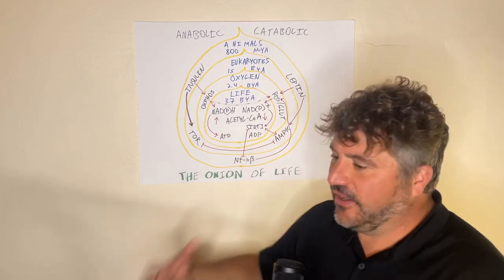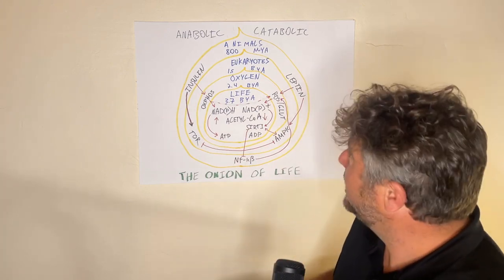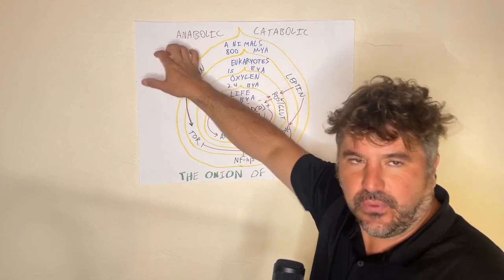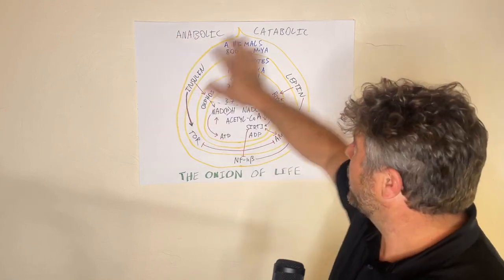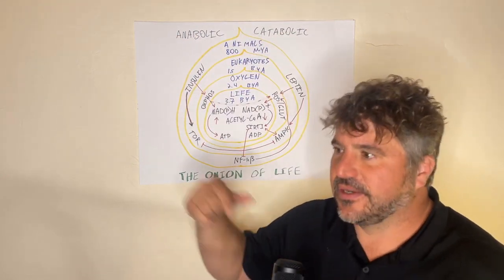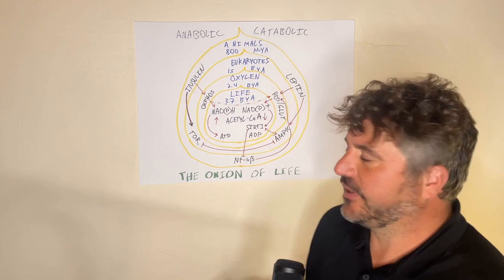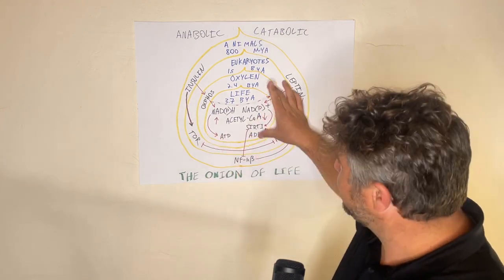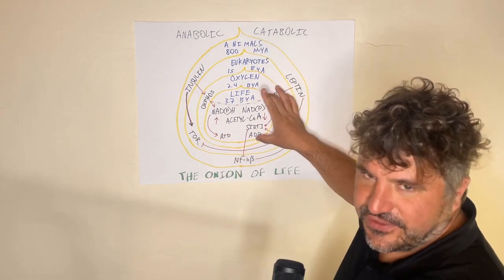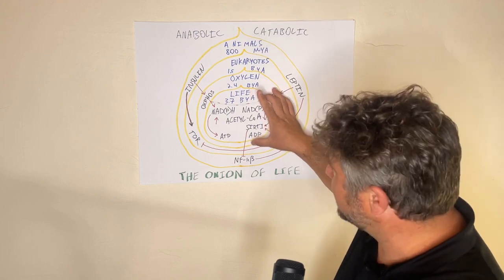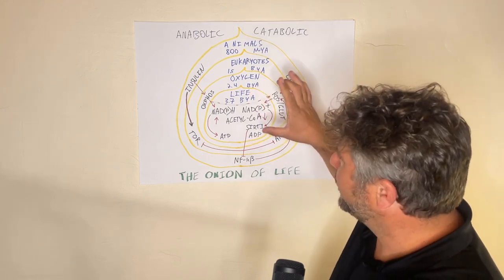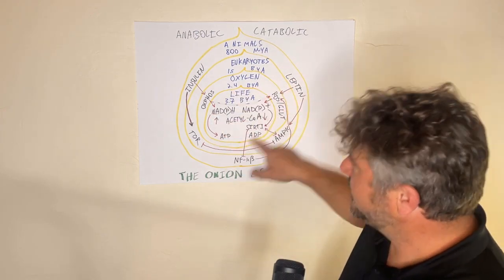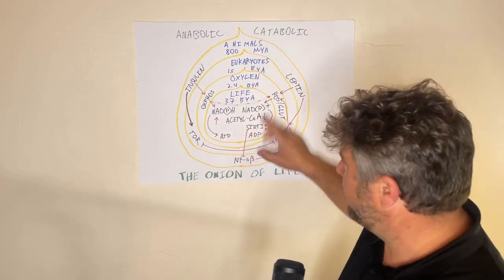The cells know whether they're in anabolic mode, which means energy-storing mode, or catabolic mode, which means sort of tearing-down mode, based on these core sensors that all living cells respect. All living cells are looking at this. This is the DOS of life.